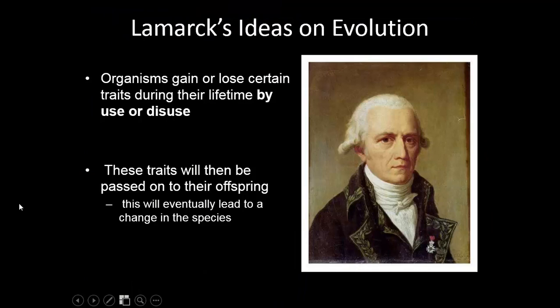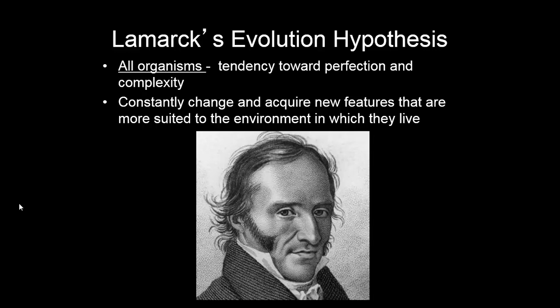Organisms gain or lose certain traits during their lifetime by use or disuse — this is the idea of Lamarck. Jean-Baptiste Lamarck was a French naturalist who observed that animals were very well adapted to their environment and tried to explain this. Lamarck believed the Earth was only a few thousand years old, so his theory fits with that logic. He believed that traits will be passed on to offspring, and he said this will eventually lead to a change in species.